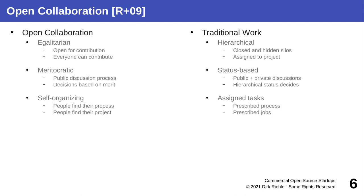The way open source software is developed in community open source projects is called open collaboration, which is egalitarian, meritocratic and self-organizing. What that means is that everyone can contribute — you may not get what you're doing accepted, but you have a fair chance. This is different from companies where you get assigned to a project as an employee and people from outside cannot contribute because they don't even know about it.